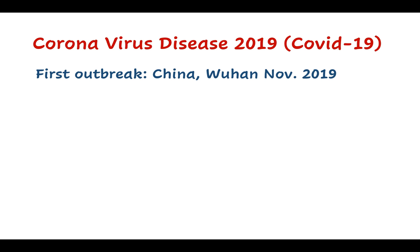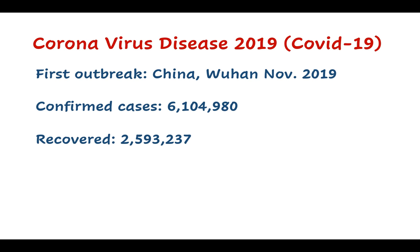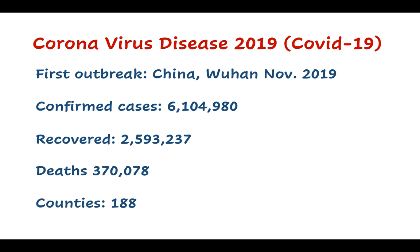As you know, COVID-19 started in China and spread to most countries around the world within a few months. Now we have more than six million confirmed cases and more than two and a half million recovered cases. More than 370,000 died from the disease, and the disease is detected in already 188 countries around the world.